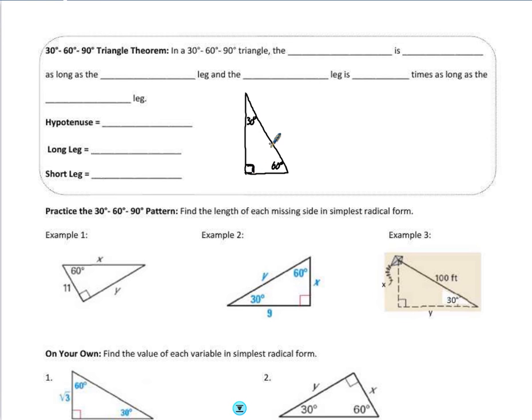So in a 30-60-90 triangle, there's a special relationship to the sides based off those interior angles. The hypotenuse is twice as long as the short leg.